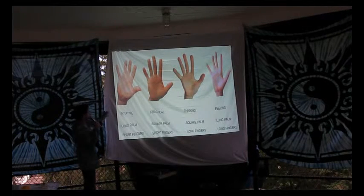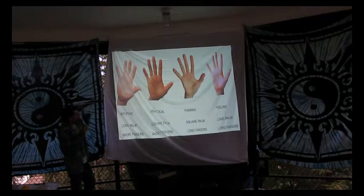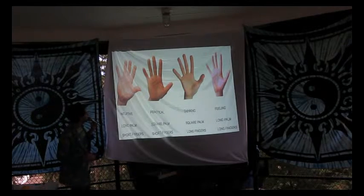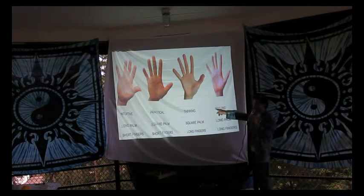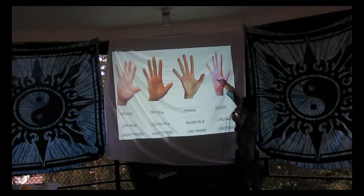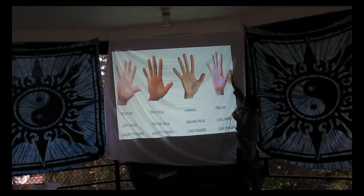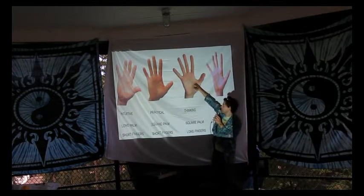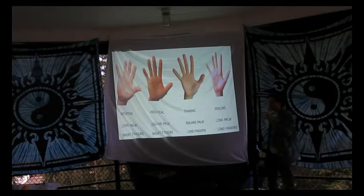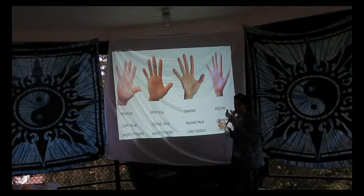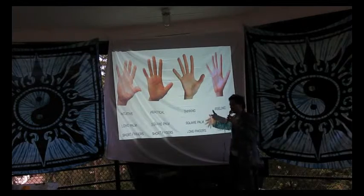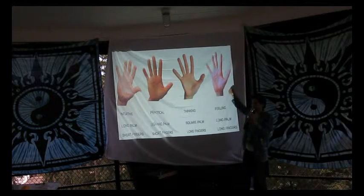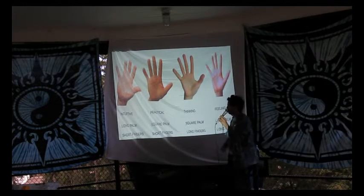In terms of construction of the hand, you have long palms and square palms. A long palm with long fingers is a feeling type of hand — a water type. Air hands, which are thinking type of hands, have a square palm with long fingers; the width of the hand seems equal to its length, very blocky. Long palm and long fingers are like fins — they deal with emotions and water. Square with long fingers are like feathers — a great way to remember the difference between those two.